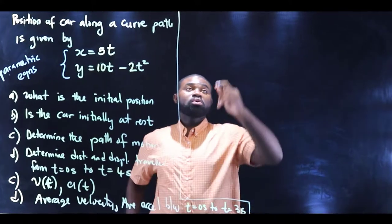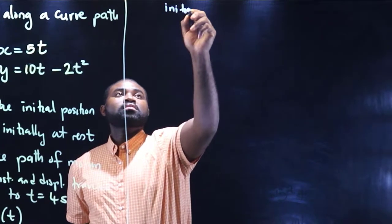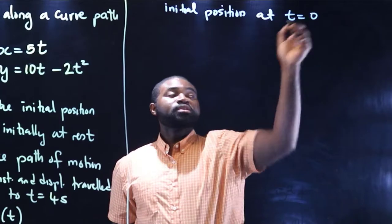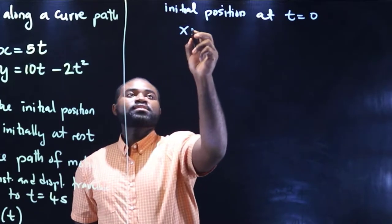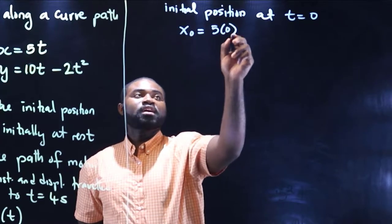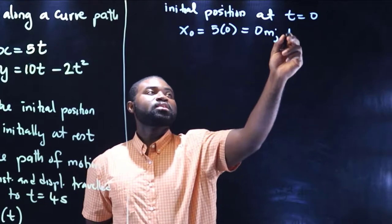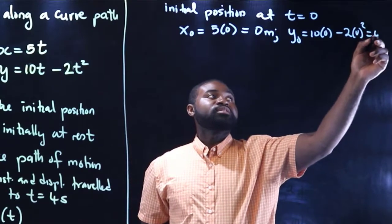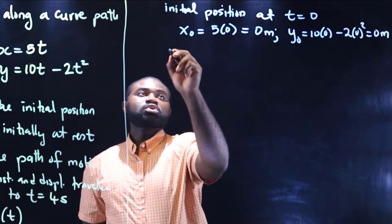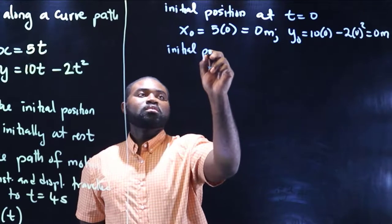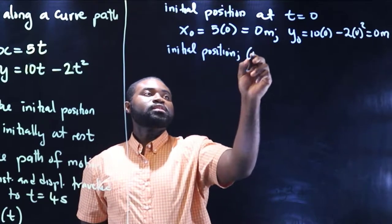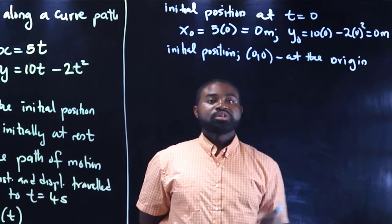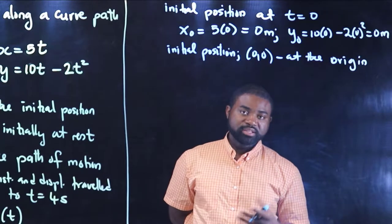Remember, the initial position is of course at t equal to 0. So x(0) will be equal to 5 multiplied by 0, which is 0 meters. y(0) will be equal to 10 times 0 minus 2 times 0 squared, which is also 0 meters. So the initial position is (0, 0), which is at the origin. The particle is undoubtedly at the origin initially.